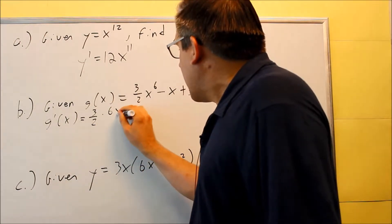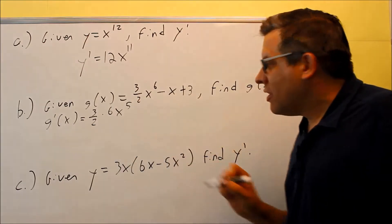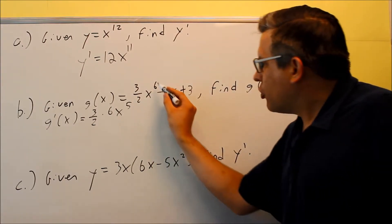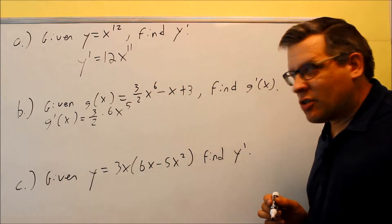That sixth is going to come down, you have x, and then subtract 1 from the original power, to the fifth. So you have 6x to the fifth would be the derivative of the x to the sixth, then we just multiply it by three halves. We'll simplify that in the next step.